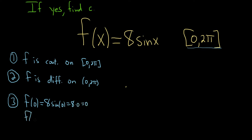And let's plug in 2π. So that'll be 8 times the sine of 2π. And the sine of 2π is also 0, so this is 8 times 0, which is 0. So we have that f(0) is equal to f(2π).